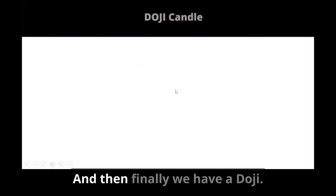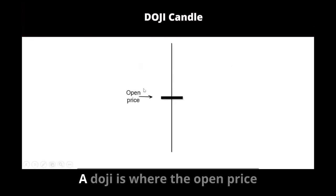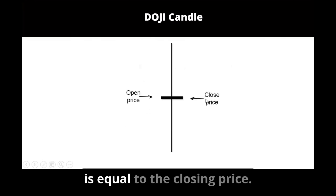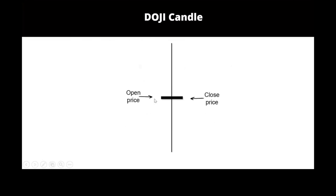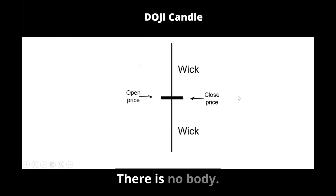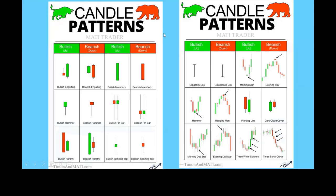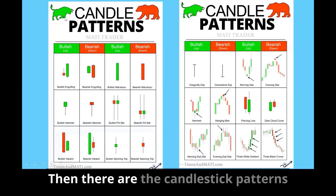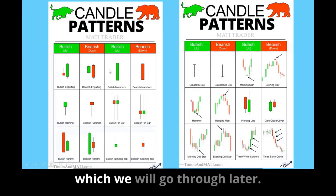Finally, we have the doji. A doji is where the open price is equal to the closing price — there is no body. Then there are the candlestick patterns, which we will go through later.